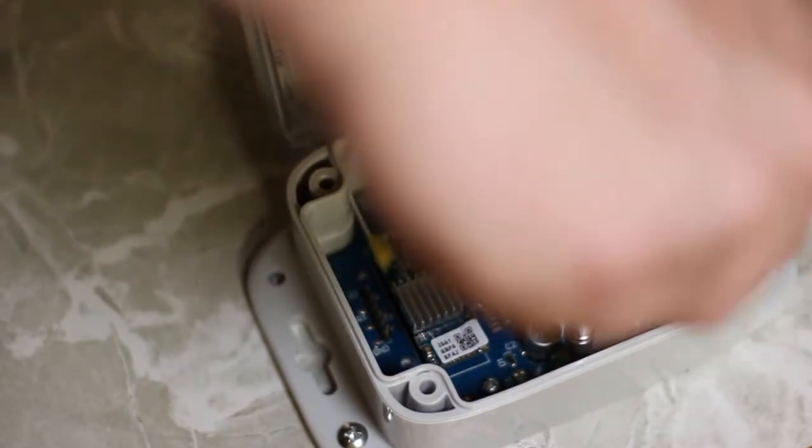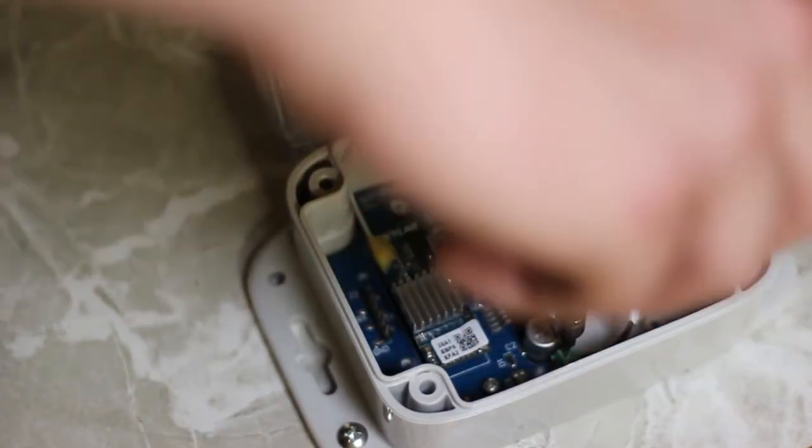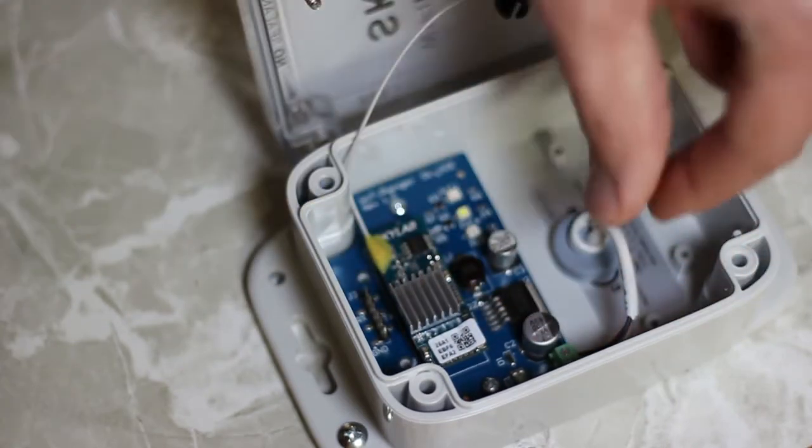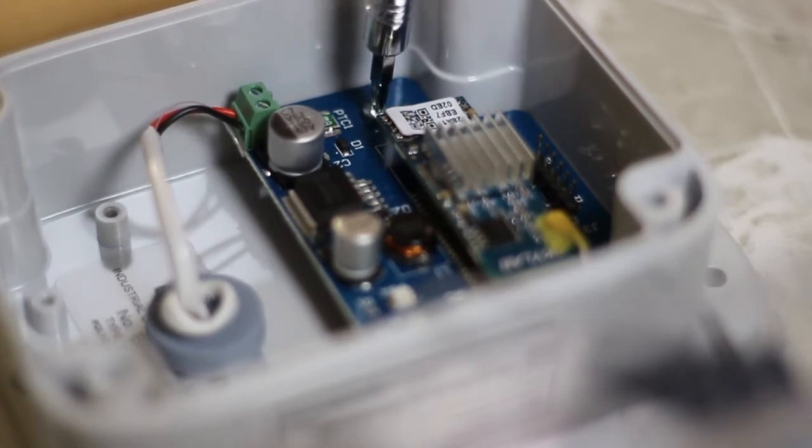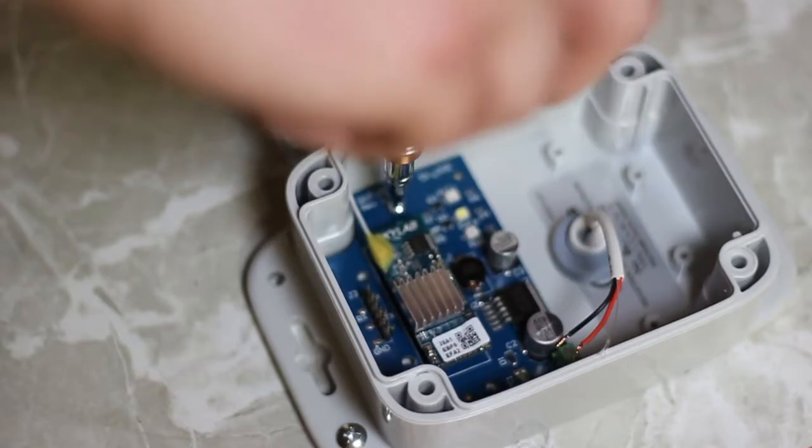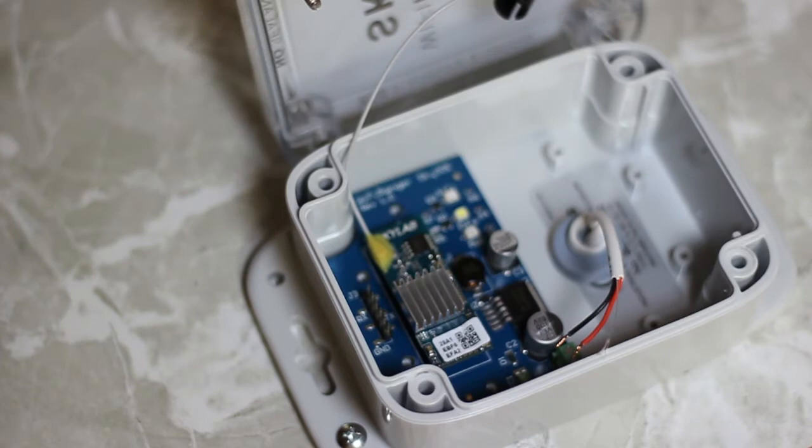Now use the precision 2mm flathead to remove the power wires. Use the precision Philips 2.5mm to remove the mounting screws. There are two screws to remove.